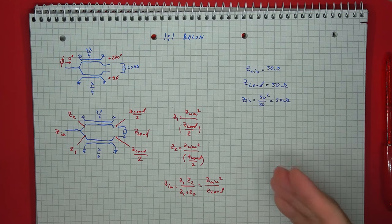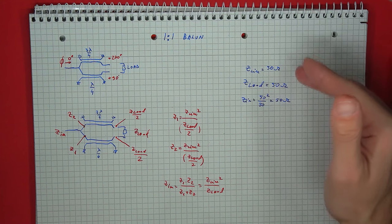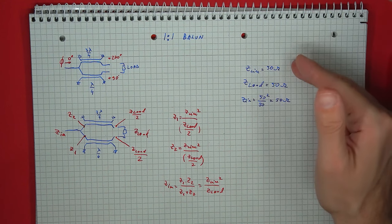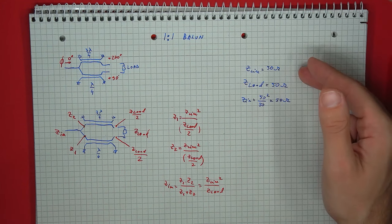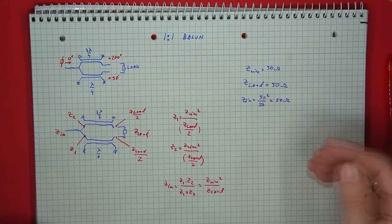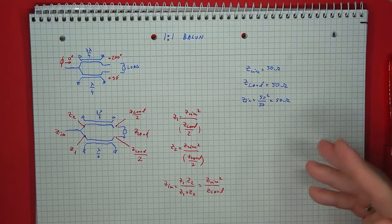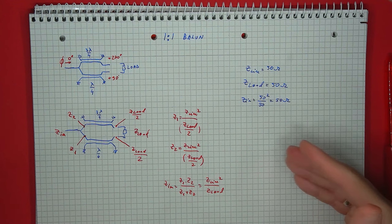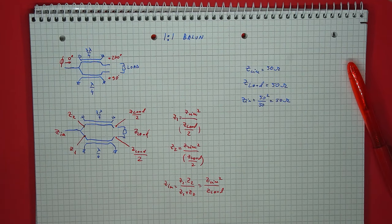In a practical case where the load is 50 ohms and the line has a characteristic impedance of 50 ohms, the impedance seen from the unbalanced side will again be 50 ohms. So when the line's impedance is equal to the source impedance, this structure works as a 1-to-1 balun.